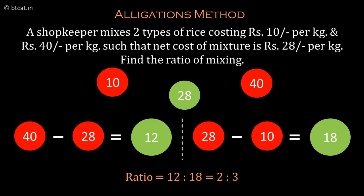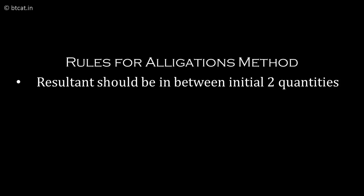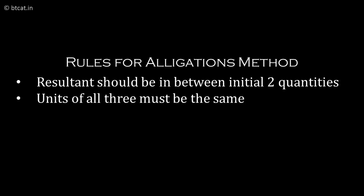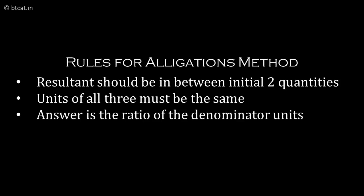Allegation is a very important, handy, and applicable concept — a very good short trick. There are three things to keep in mind: first, the resultant should always be between the two initial quantities; second, the units of all three must be the same; and third, the answer ratio — 2 is to 3 — always refers to the denominator units. Here the units were rupees per kg, so the ratio 2 is to 3 is in kg.